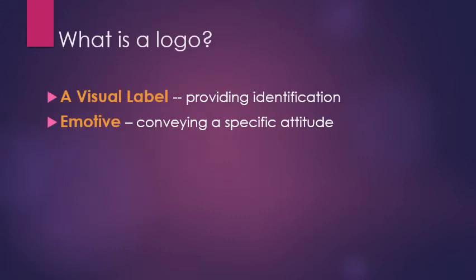A logo is a catch-all term for this emblematic visual representation of a brand. It's a visual label for identifying — there's usually a name or words so you can read the logo. It's also emotive, conveying a specific attitude for the business, individual, or product. The two key pieces of a logo are: a visual label providing identification, usually through readable words, and an emotive quality conveying a broader attitude.